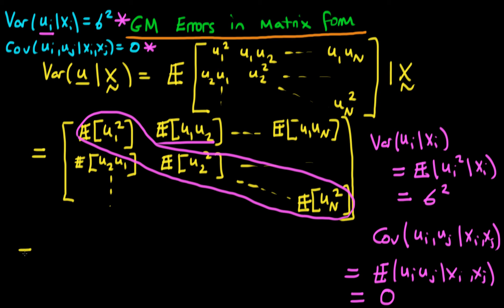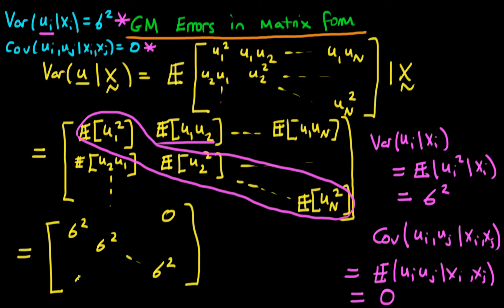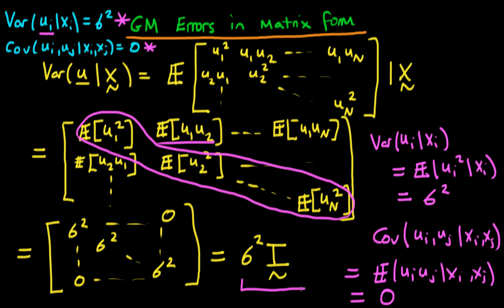Taking these two things together, we can rewrite our matrix: each of the diagonal components are going to be sigma squared — the first, the second, and the nth diagonal component — and all of the off-diagonal components are going to be equal to zero. We can simplify this a little bit further: this is just equal to sigma squared times the identity matrix I, where the identity matrix I has only diagonal components equal to one and all off-diagonal components equal to zero. So in a fairly compact way, we can represent the two conditions of homoscedastic errors and no autocorrelation by the single expression that the variance of u given x equals sigma squared times the identity matrix I.